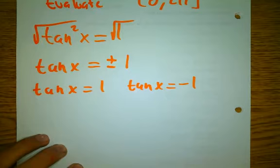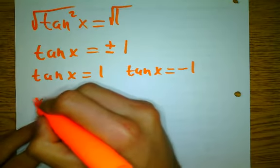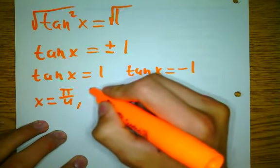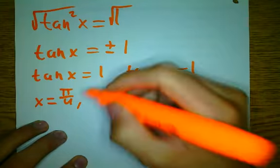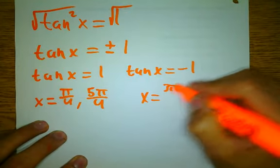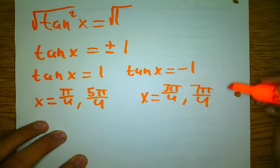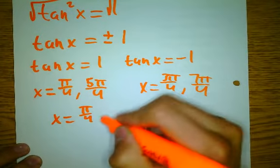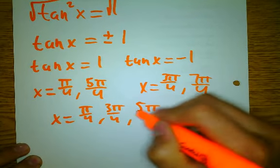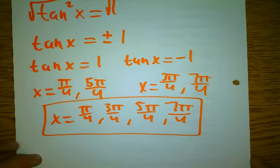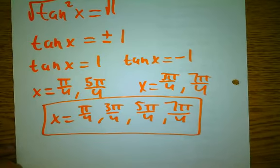Where is tangent positive 1? Pi over 4 and 5π/4, because it's in quadrant three. And where is tangent negative 1? 3π/4 and 7π/4. You could list them separately, or just say x = π/4, 3π/4, 5π/4, and 7π/4. More than likely on your CBA they'll list them in order from least to greatest, but it's multiple choice.